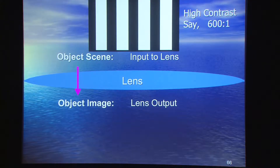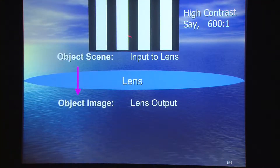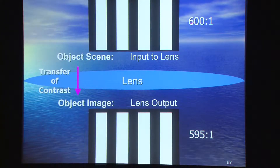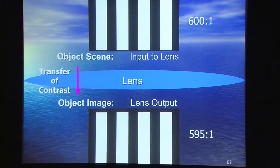I'm postulating a lens looking at a scene — a nice simple scene of low-frequency black and white bars with high contrast, say 600 to 1. The lens's task is to transfer that object seen from the real world into an image. If we had a perfect lens, that image would be exact. But there is no such thing as a perfect lens — we cannot get 600 to 1 through. Even with a terrific lens, we lose a little contrast, even at the lowest frequencies.